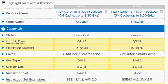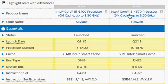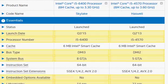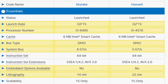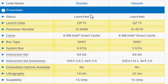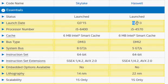Let's compare Intel's newer Skylake i5-6400 with the Haswell i5-4570 processor. Skylake is the newer processor launched recently in Q3 of 2015 as we make this video, while Haswell was launched more than two years ago.